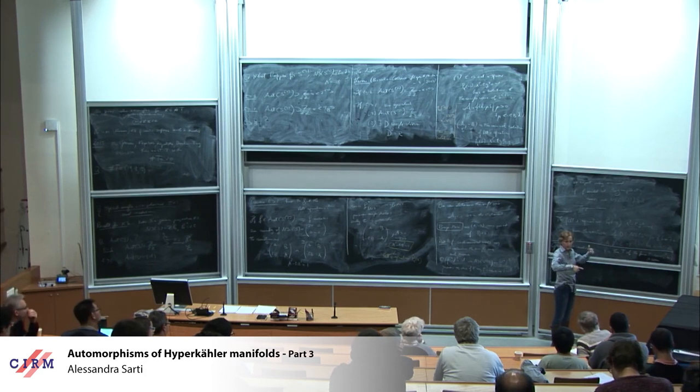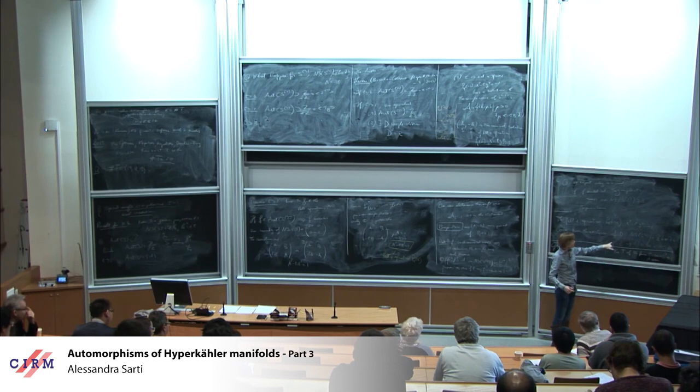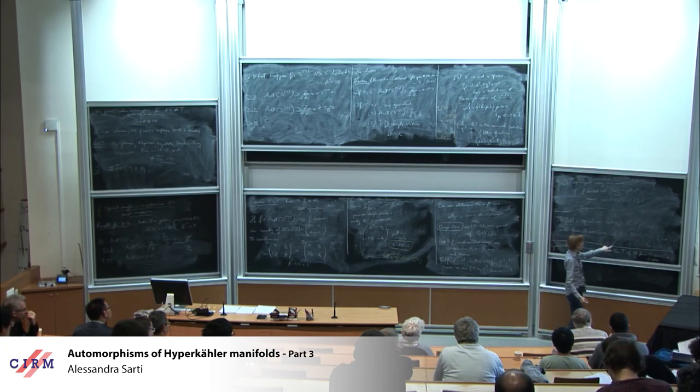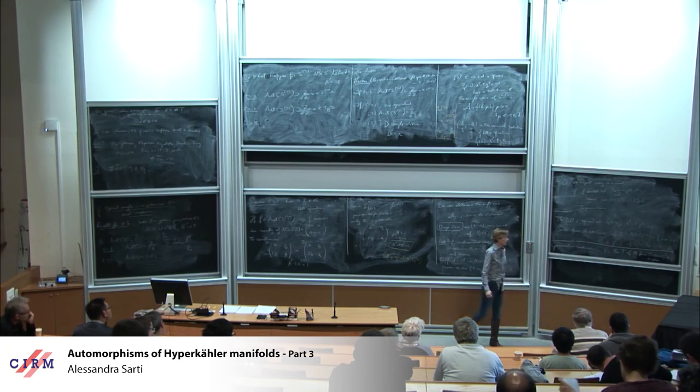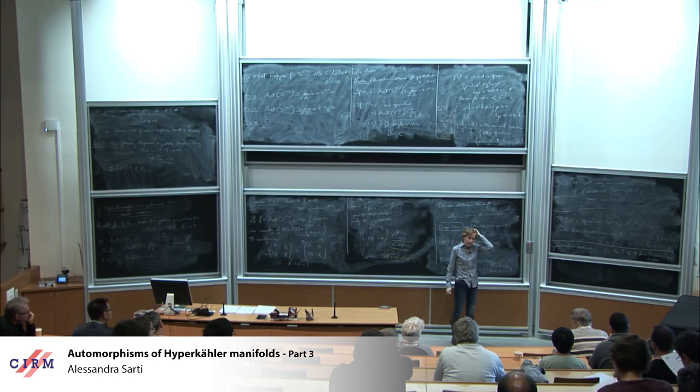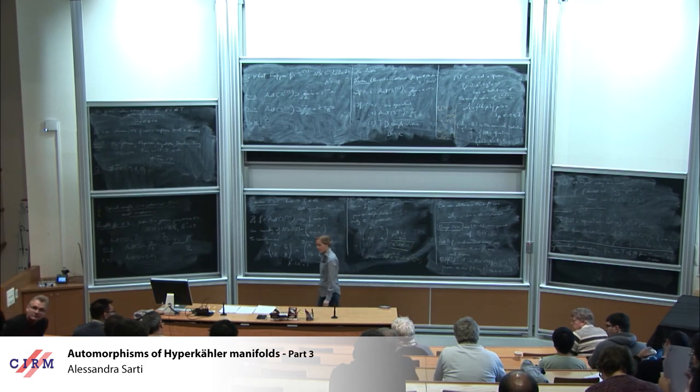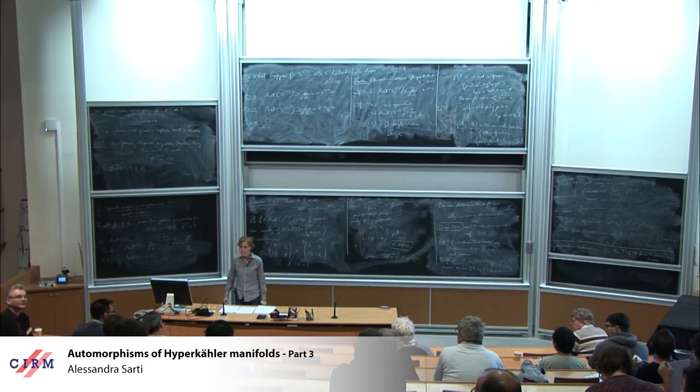Saying that the Neron-Severi group would be of bigger rank. So the rank of NS S2 is at least 8. So we expect only non-symplectic involution. And if such an involution exists, so we have all this condition. So I will just say one word about the second Pell equation. And then I will stop. So the second Pell equation Pt minus 1, x square minus t y square equal minus 1, comes from the existence of d in NS S2.